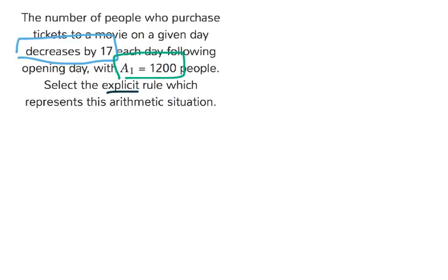So we want to write an explicit rule which is going to be of this form: a sub n. We want to know the number of tickets sold any day.